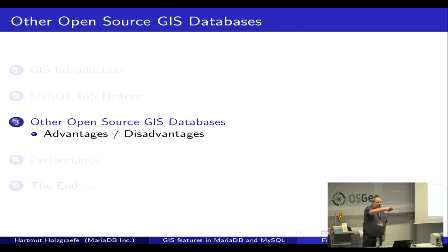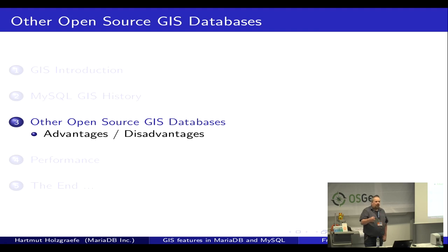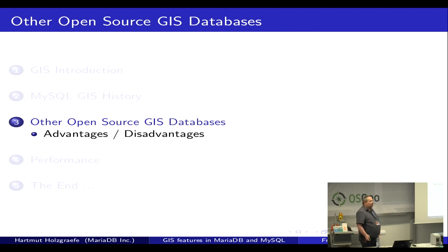One more thing in MariaDB 10.2: not only do we now have spatial indexes in InnoDB, we also now have GeoJSON as a supported format in addition to well-known text and well-known binary. You can parse GeoJSON and put it directly into a spatial column, and you can also get results in GeoJSON format, which is usually much better supported by other languages and tools than the SQL well-known text format.